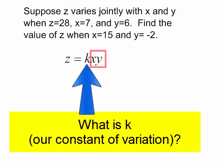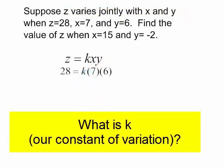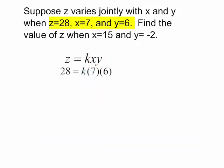I need to know k. I do know that when z is 28, x is 7, and y is 6. Let's simplify this. 7 times 6 is 42.